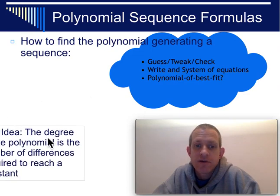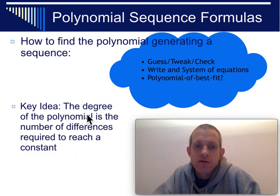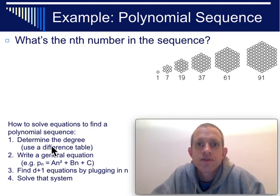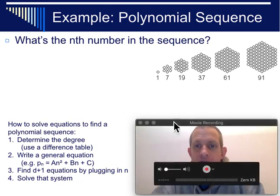The key idea for all of this, however, is the degree of the polynomial, meaning is it an x squared or an x cubed or an x to the fourth or something like that. The degree is always going to be the number of differences that are required for you to be able to reach a constant number. So, here's the first strategy. To find a formula for a polynomial sequence, the first thing you should do is figure out what the degree is. Use a difference table to do that. Then you can write a general equation. And then, this is the solving system of equations technique. You'll write a couple of equations and solve that.